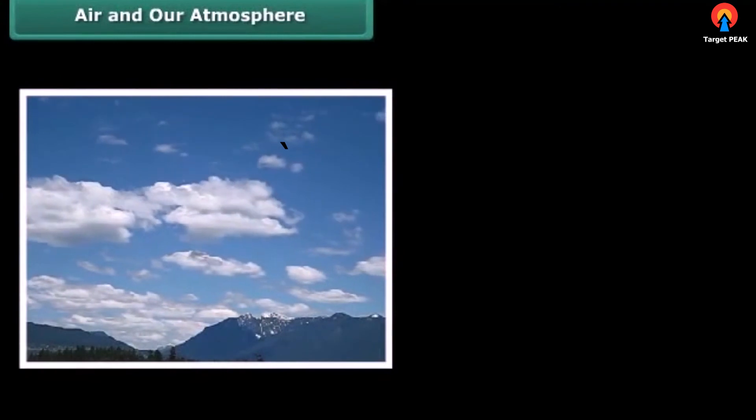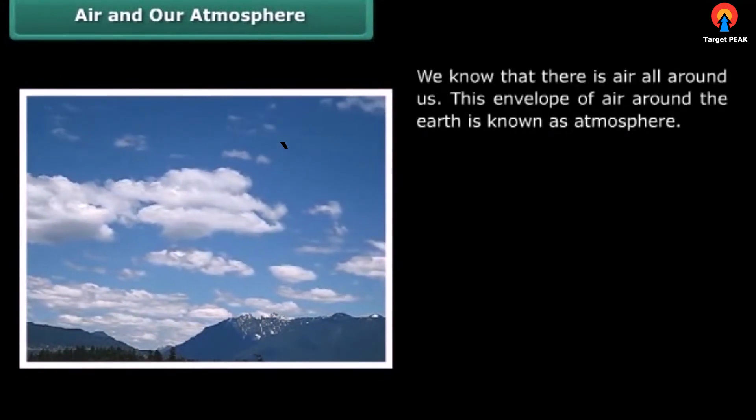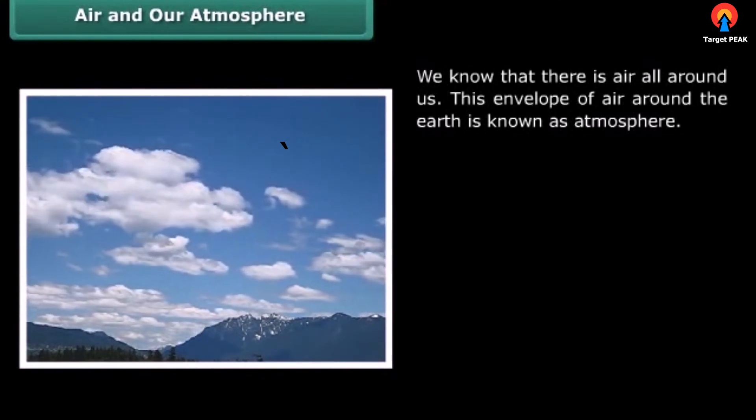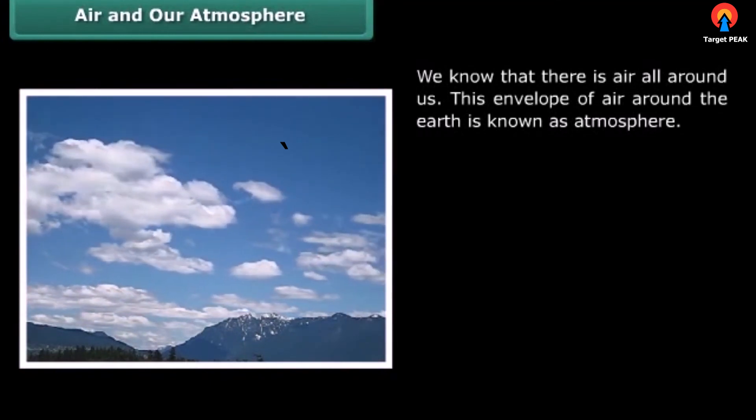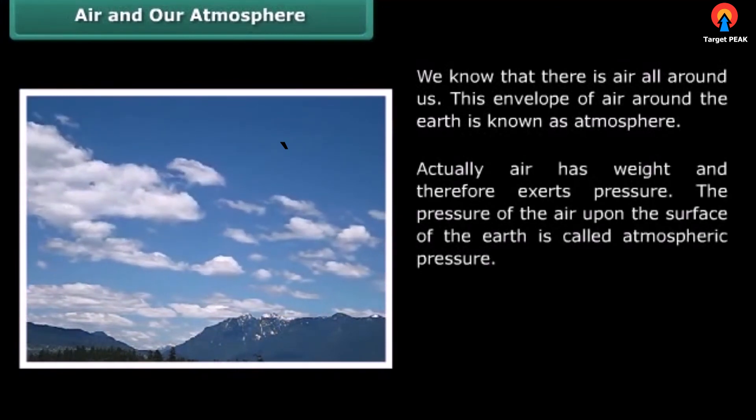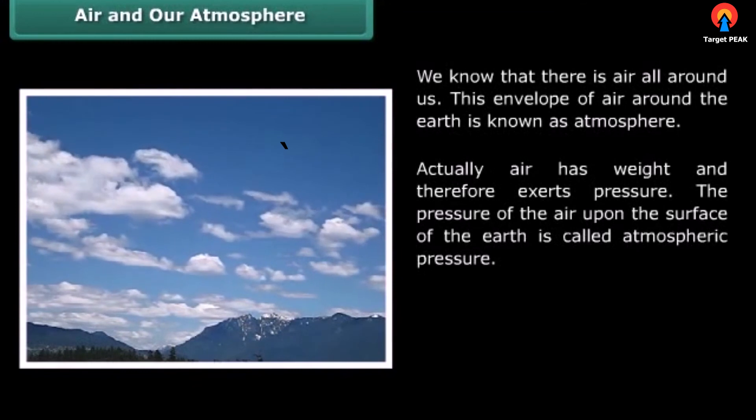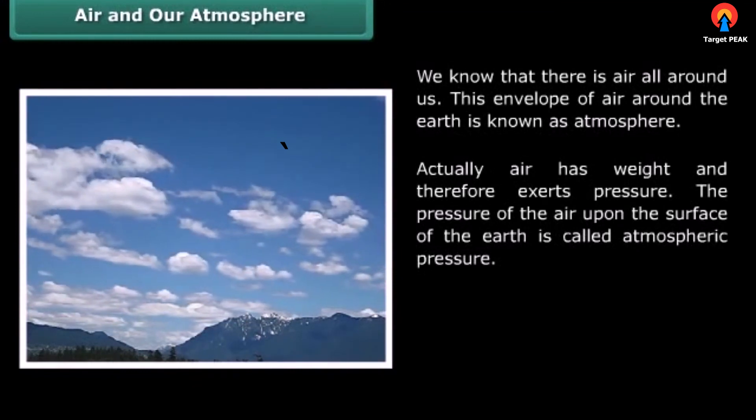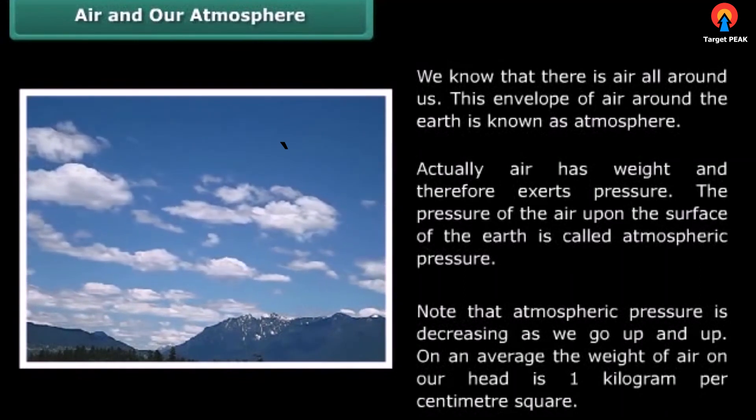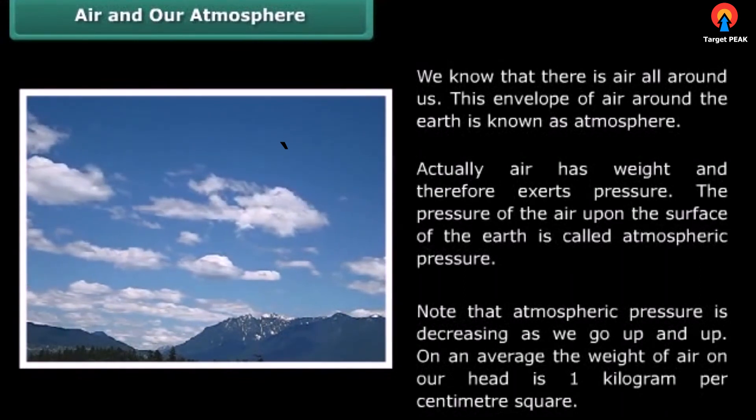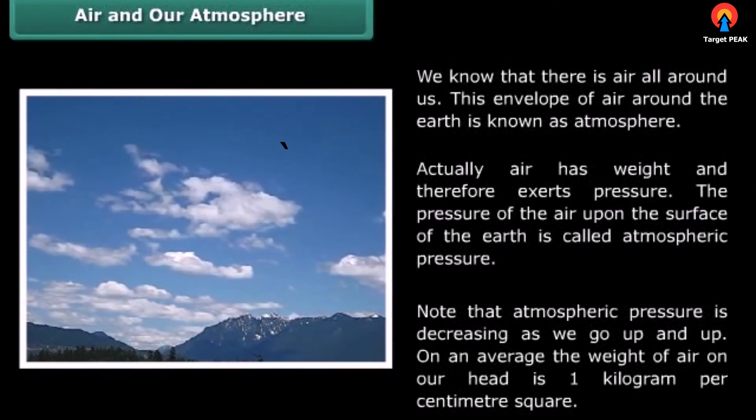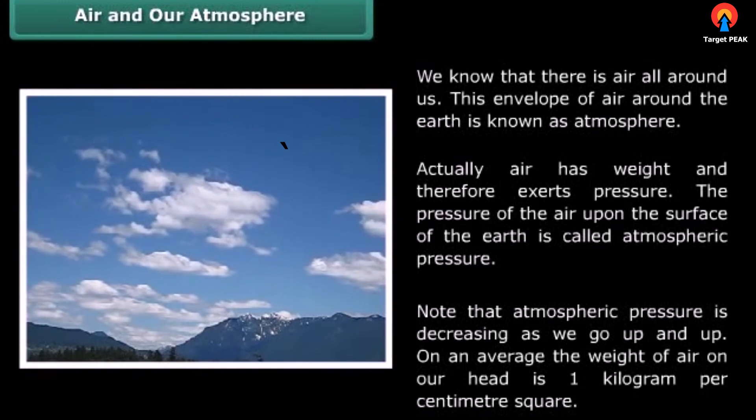Air and our atmosphere: We know that there is air all around us. This envelope of air around the earth is known as atmosphere. Actually, air has weight and therefore exerts pressure. The pressure of the air upon the surface of the earth is called atmospheric pressure. Note that atmospheric pressure decreases as we go up and up. On an average, the weight of air on our head is one kilogram per centimeter square.